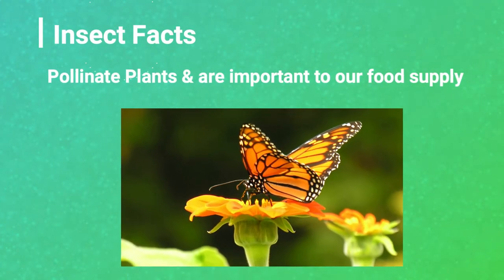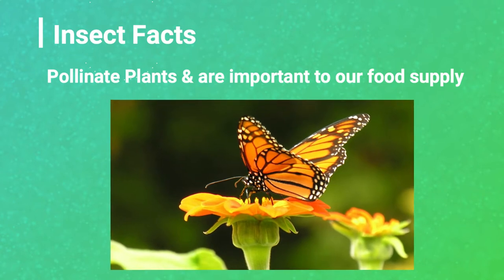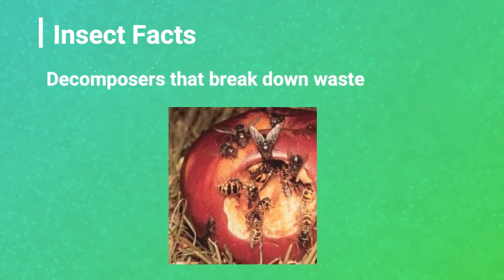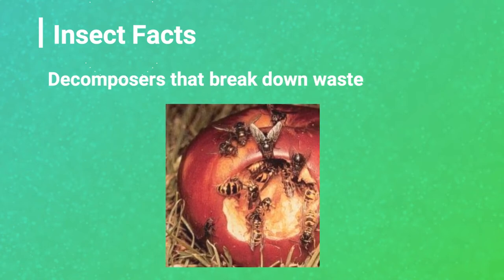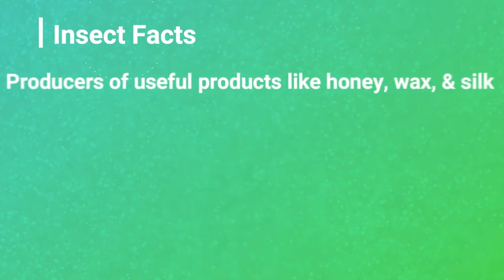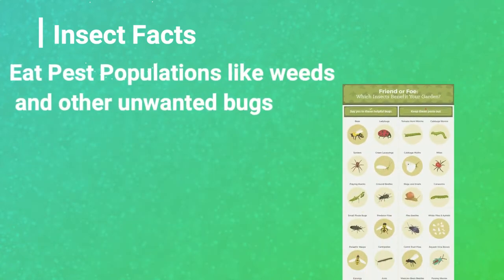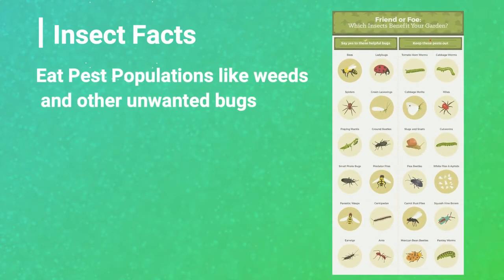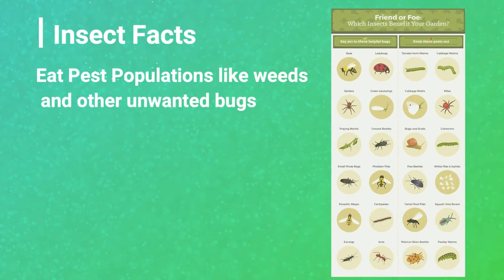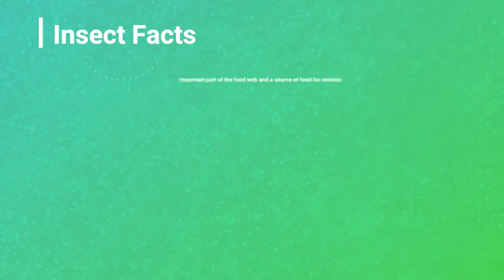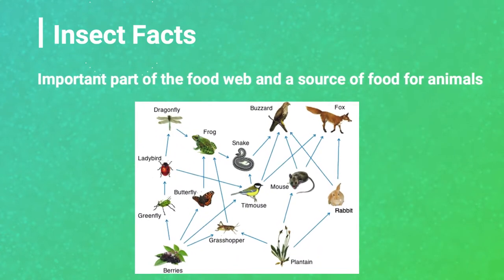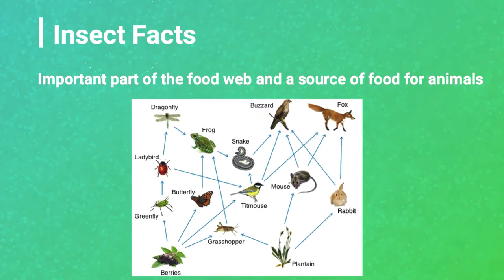Insects pollinate plants, including the fruits and vegetables we eat, so they're important for our food supply. Insects are decomposers, meaning they break down waste that would otherwise build up. They're also producers that make things we need, like honey, beeswax, and silk. Insects eat a lot of pest populations and are super important to food webs and food chains. So while we might find them creepy, they're uniquely beautiful and incredibly important to life on Earth.